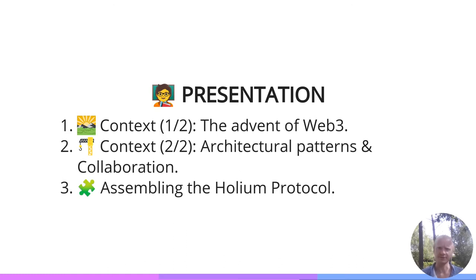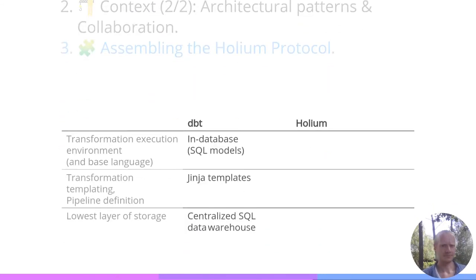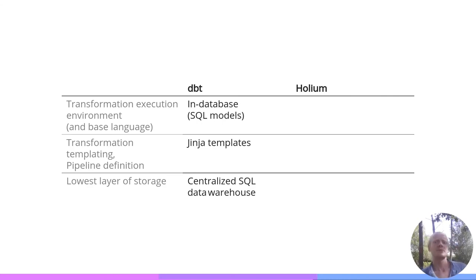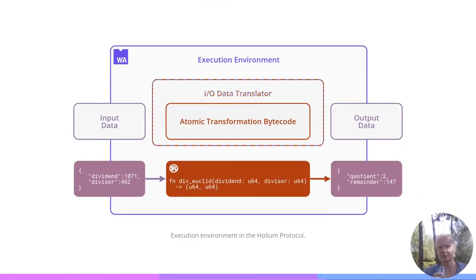That was the second macro trend. Now the question is: how do we do that? What architecture can we design? That brings us to the third and final part of the presentation, where we will progressively build the Holium protocol in three steps, comparing it to DBT on three aspects.